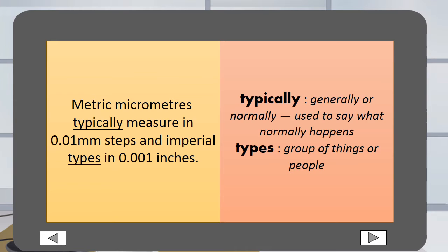Typically, other words for typically are generally or normally. Typically is used to say what normally happens. Types are a group of things or people.